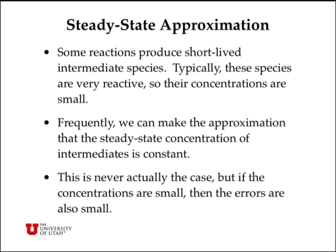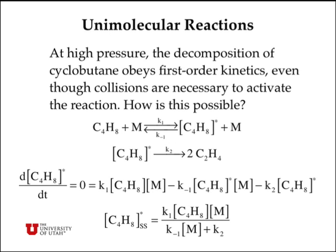One of the things very useful for predicting overall rates for complicated reactions is the steady-state approximation. This is where we assume that the concentration of chemical intermediates — typically short-lived intermediates — is constant. That's actually never truly the case, but if the concentrations are small, then the errors made by this approximation are also small. Let's see how this works for a case of a unimolecular reaction. Cyclobutane, C4H8, if you simply heat it up, will decompose to ethylene.